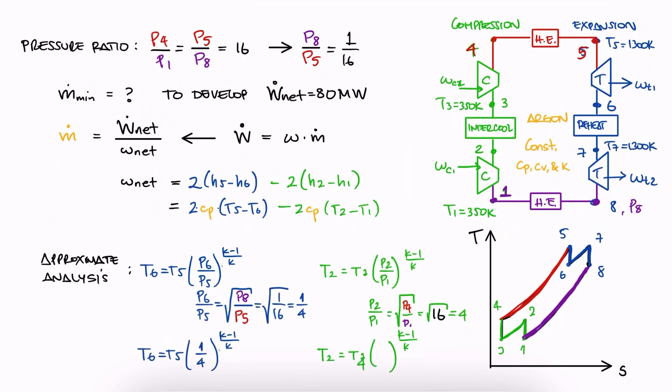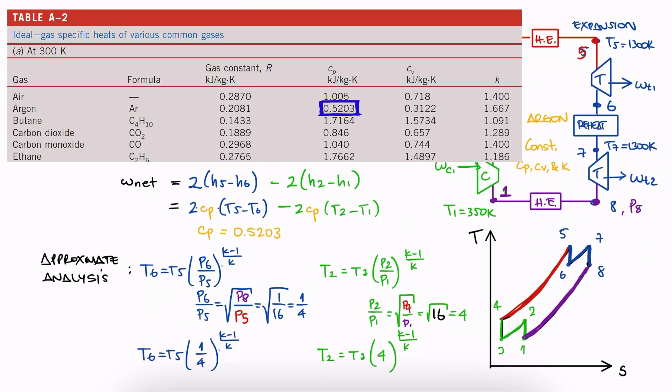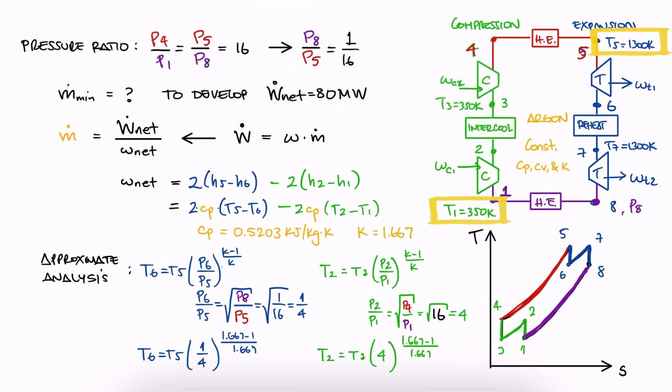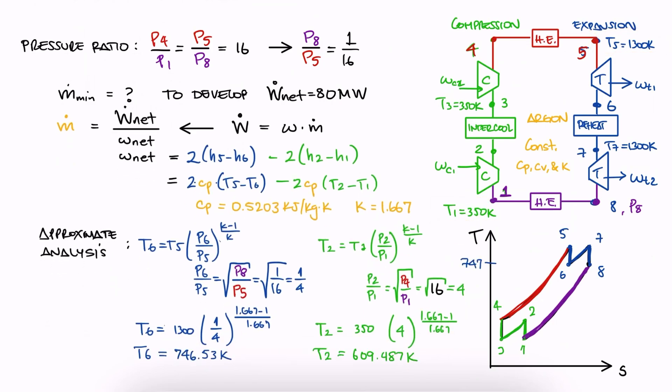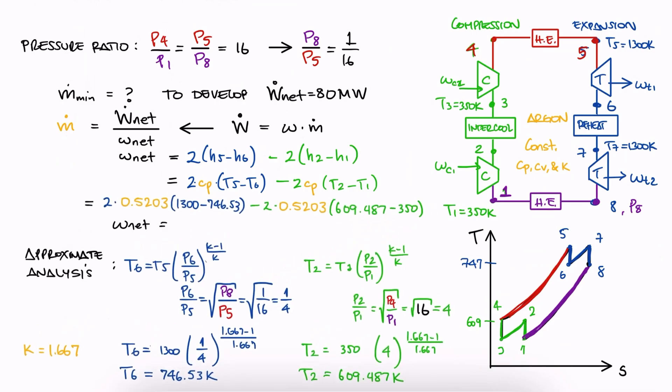We substitute the pressure-ratios. We look up CP and K for argon. We substitute K and the known temperatures and find T6 and T2. We substitute the temperature values in the specific heat CP and we find the net-specific work.